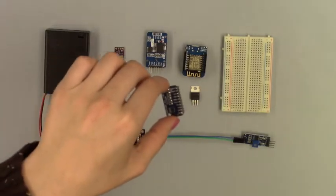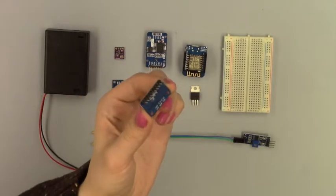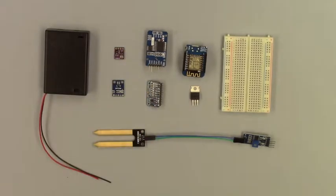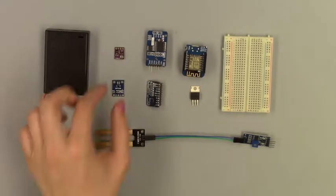Here we have the ADS1115 16-bit analog to digital converter, which is used in conjunction with the soil moisture probe.